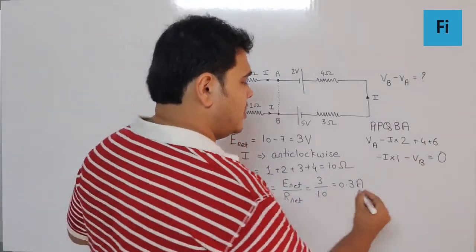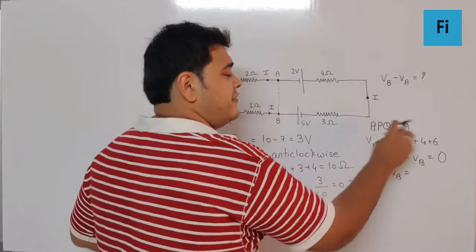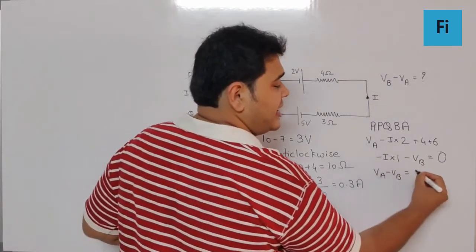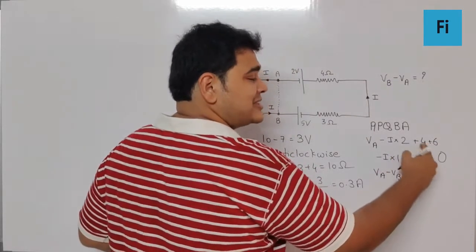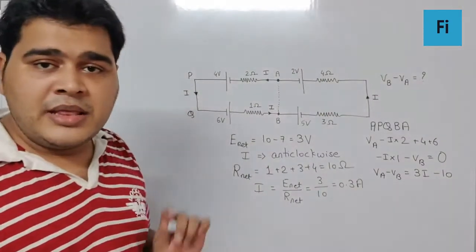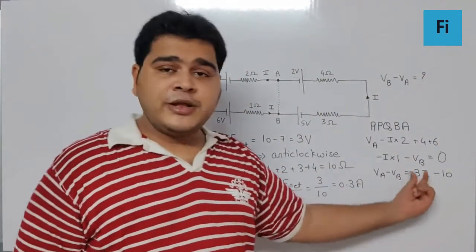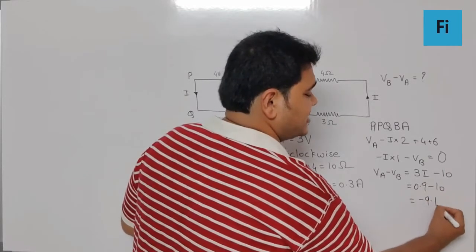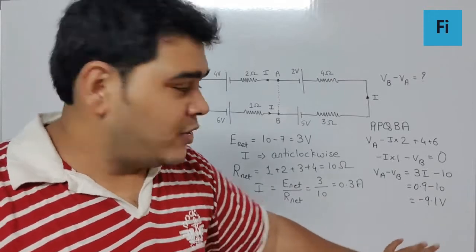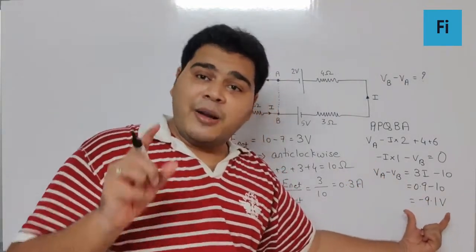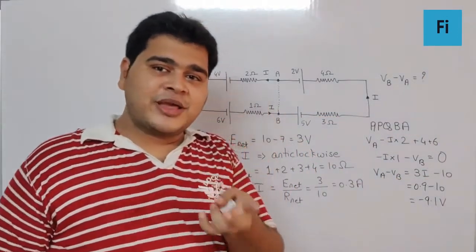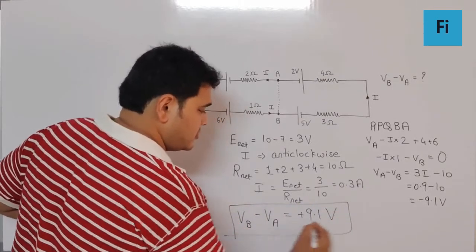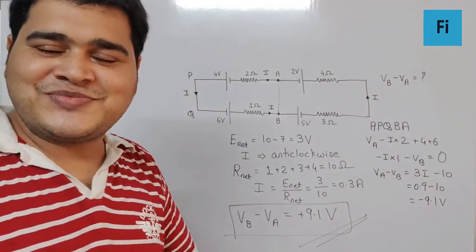Rearranging, VA minus VB equals I times 2 + I times 1 minus 4 minus 6, which simplifies to 3I minus 10. Substituting I = 0.3: 3 times 0.3 = 0.9, so VA minus VB = 0.9 minus 10 = minus 9.1. But we need VB minus VA, so reversing the sign gives VB minus VA = plus 9.1 volts.